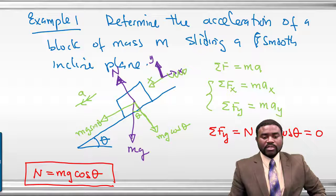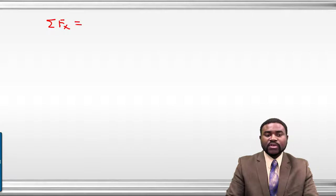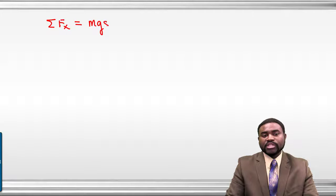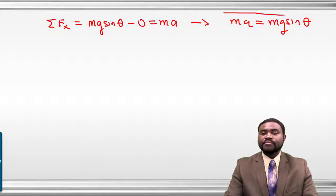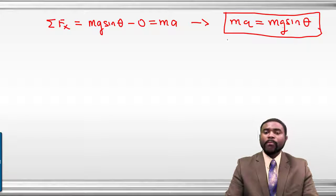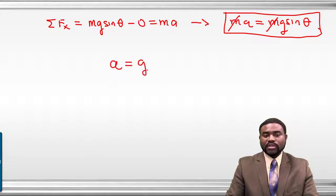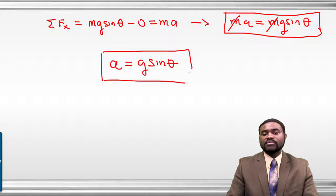In the x-direction, the summation of Fx equals mg·sinθ minus 0, and this equals MA. This implies that MA equals mg·sinθ. From this equation the M's cancel, and the acceleration of the block down the inclined plane is just g·sinθ.